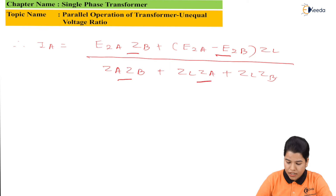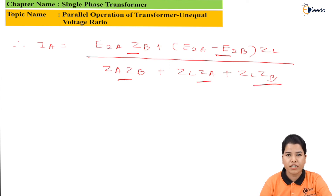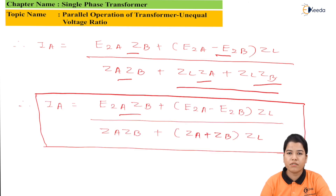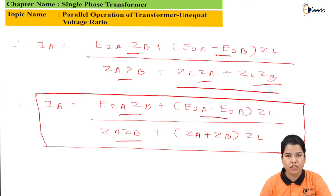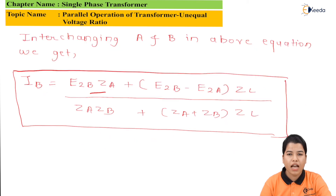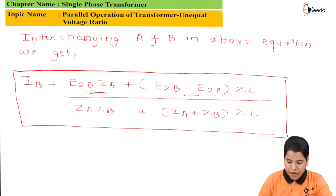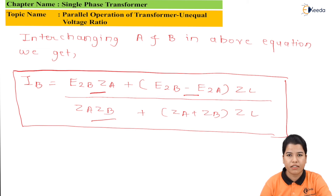This is the formula for the current of transformer A. Similarly, we can find the formula for the current of transformer B by interchanging A and B in the above equation. Hence, the equation for IB can be written as IB equals E2B·ZA plus bracket E2B minus E2A times ZL, divided by ZA·ZB plus bracket ZA plus ZB multiplied by ZL. In this way, we have found the values of current for both transformers for parallel operation based on unequal voltage ratio. Thank you friends for watching this video.